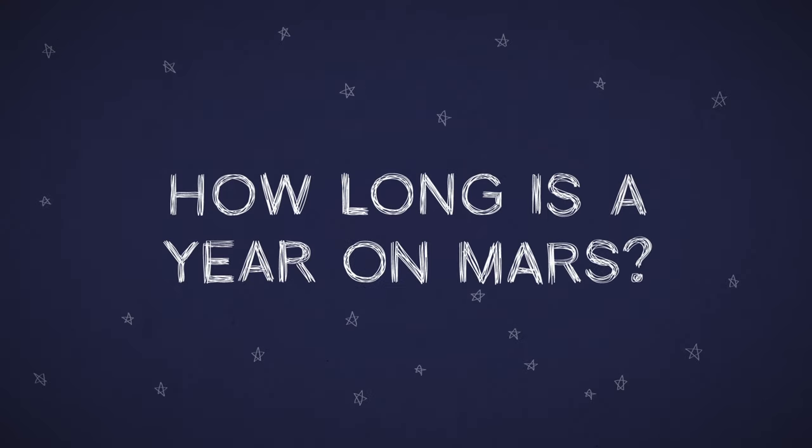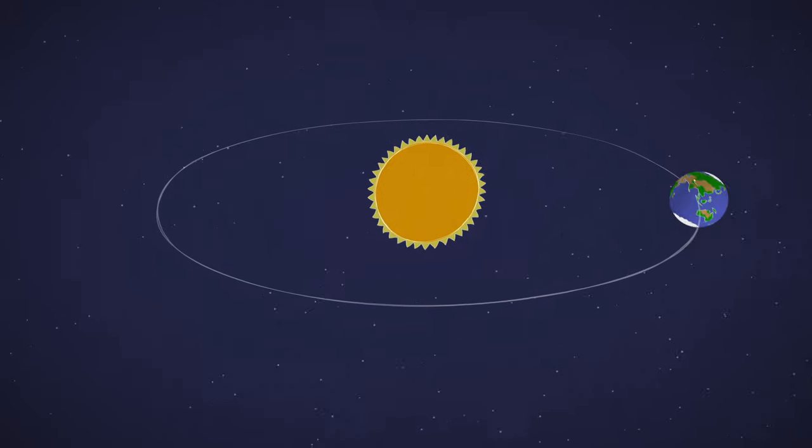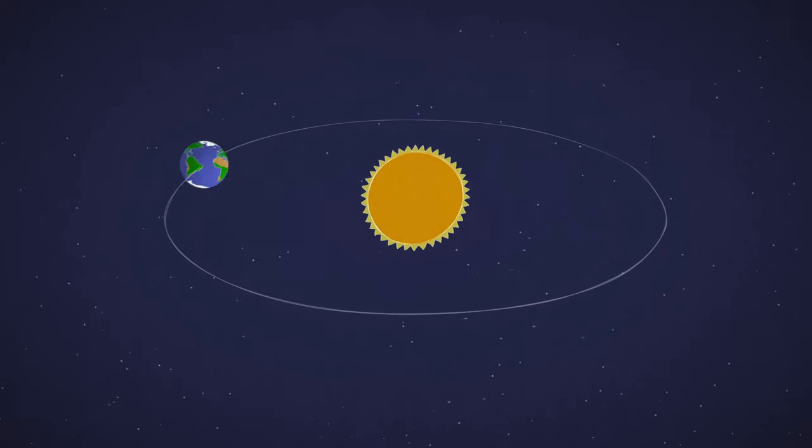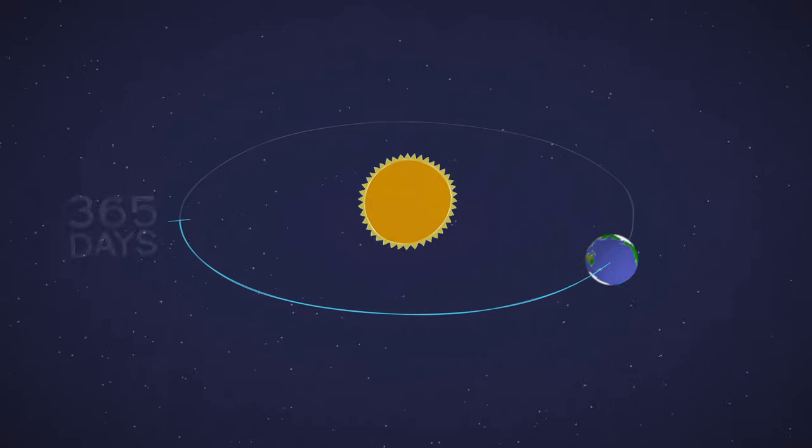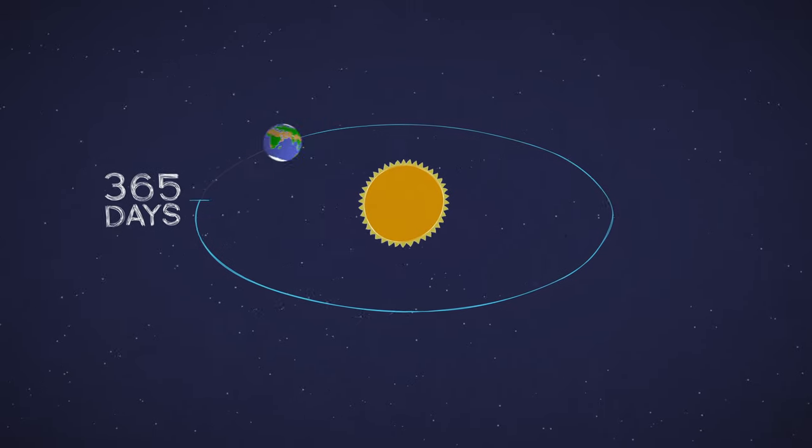How long is a year on Mars? The Earth zips around the Sun at about 67,000 miles per hour, making a full revolution in about 365 days, one year on Earth.